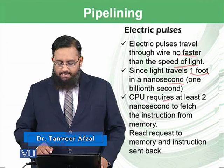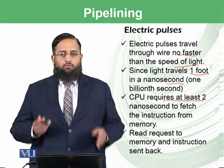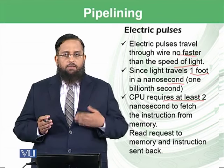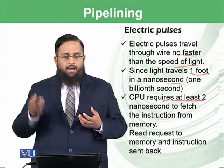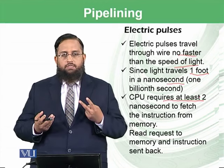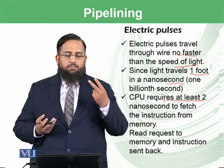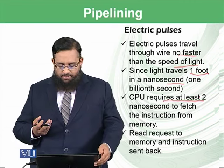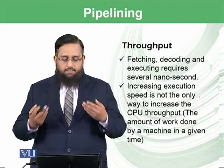A CPU requires at least two nanoseconds to fetch an instruction from main memory. For example, if a CPU wants to fetch an instruction, it gives a signal to main memory requesting that instruction, and then the instruction is sent back to the CPU — those two steps involve two nanoseconds. Then the instruction will be decoded and executed, so in fact it would need several nanoseconds to perform this entire task.